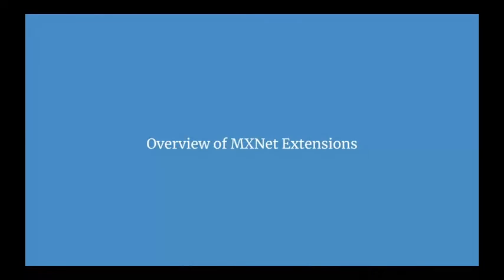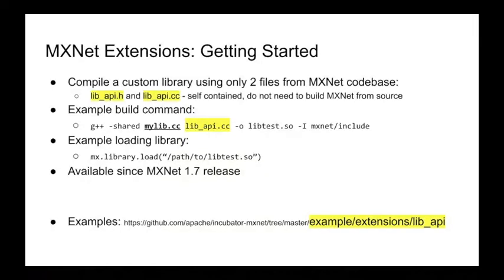So first, an overview of MXNet extensions. MXNet extensions is a set of APIs both on the front end for deep learning users and APIs on the back end for framework developers to build and distribute components without having to rebuild MXNet from source. You can create a library, put custom components in it, build it separately from MXNet, and then dynamically load it into MXNet at runtime. You can do this using only two files from the MXNet codebase: libapi.h and libapi.cc, which are self-contained and don't need any other files from the MXNet codebase. You don't need to build MXNet from source when building your custom library.